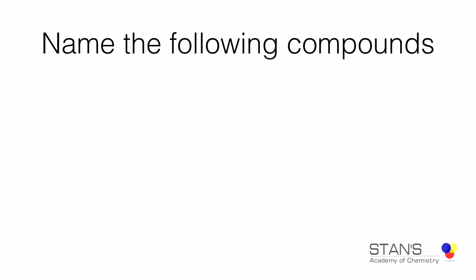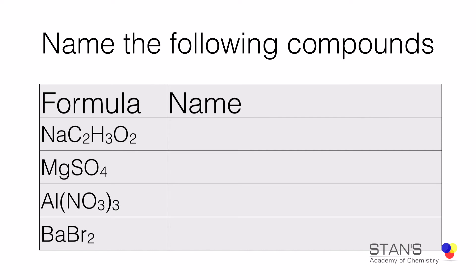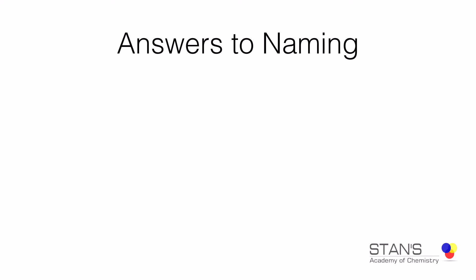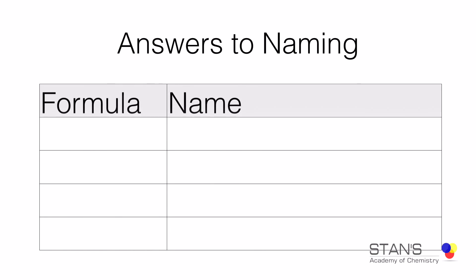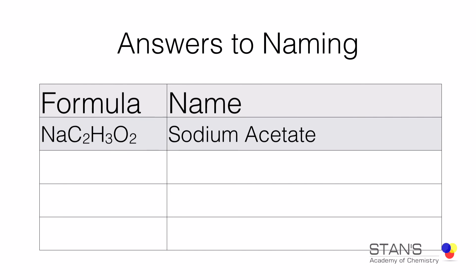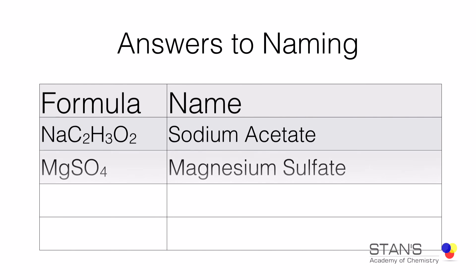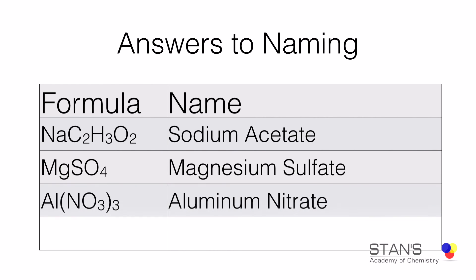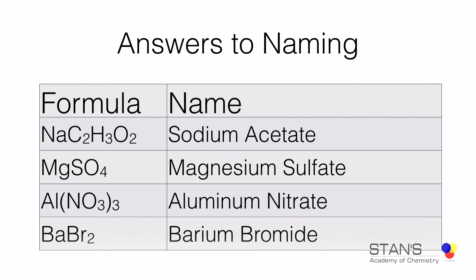Here are some examples for you to work on. You may pause the video, solve the questions, and then check your answers. Here are the answers: the first one is sodium acetate, the second one is magnesium sulfate, the third one is aluminum nitrate, and the fourth one is barium bromide. It would be a good idea to review names and formulas of polyatomic ions before you start naming ionic compounds.